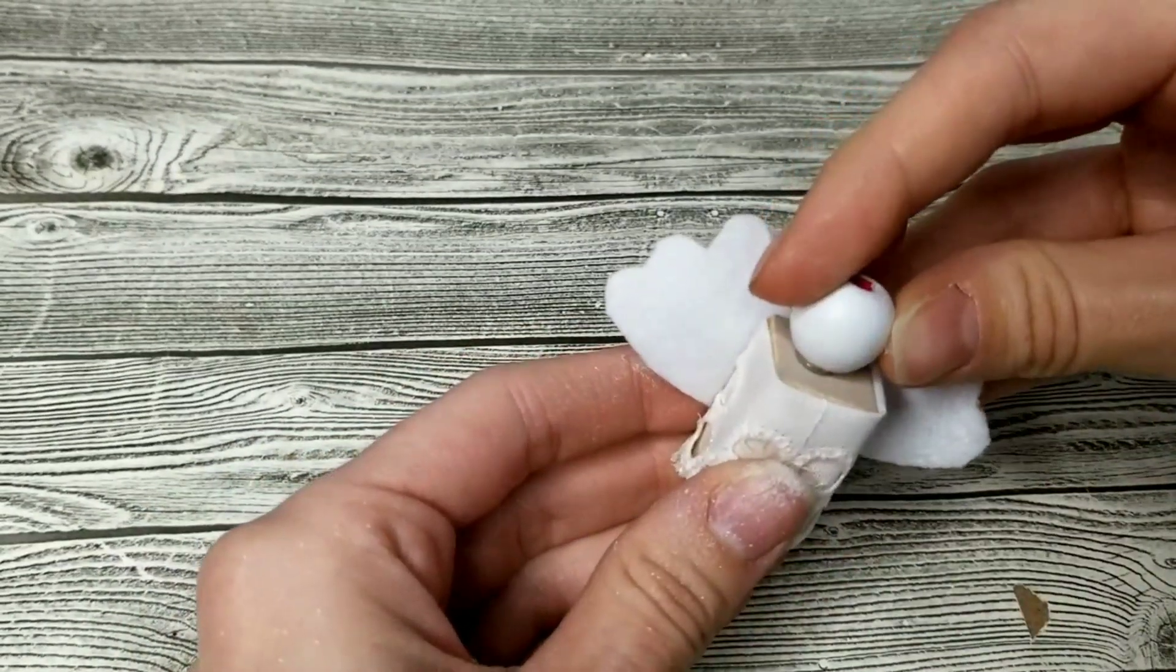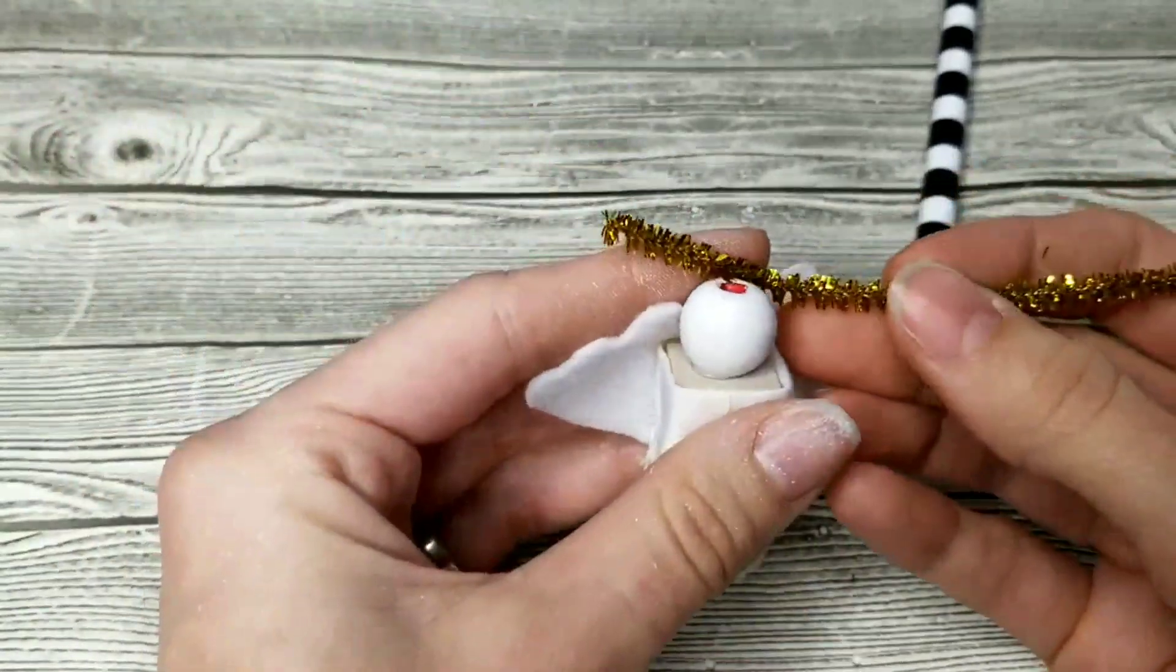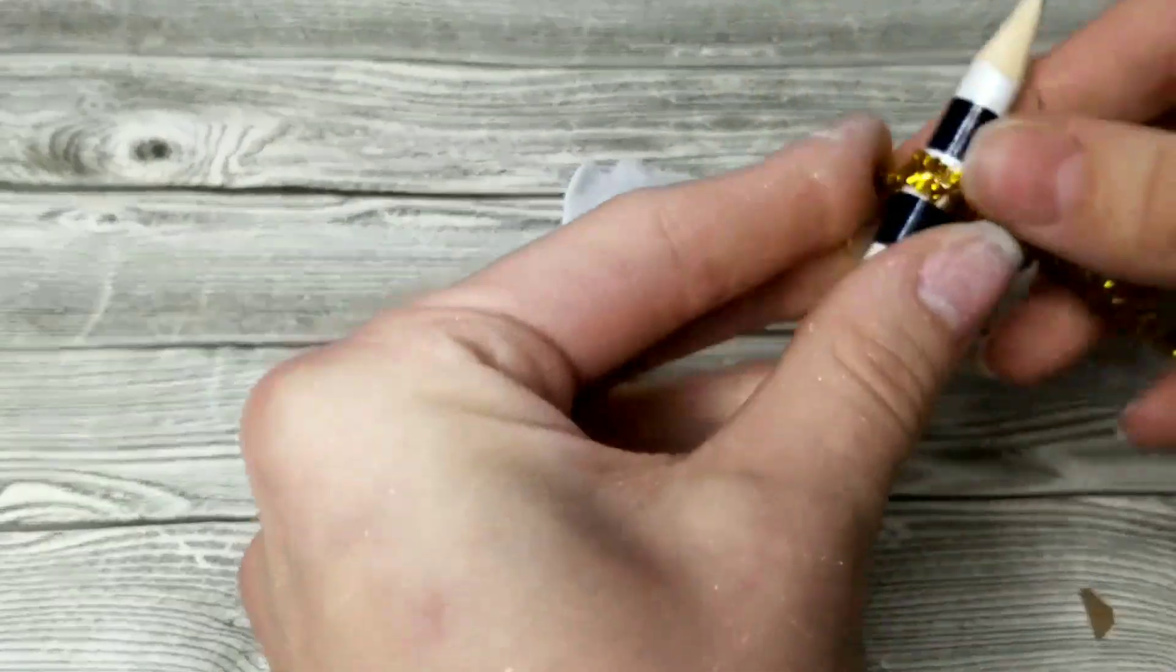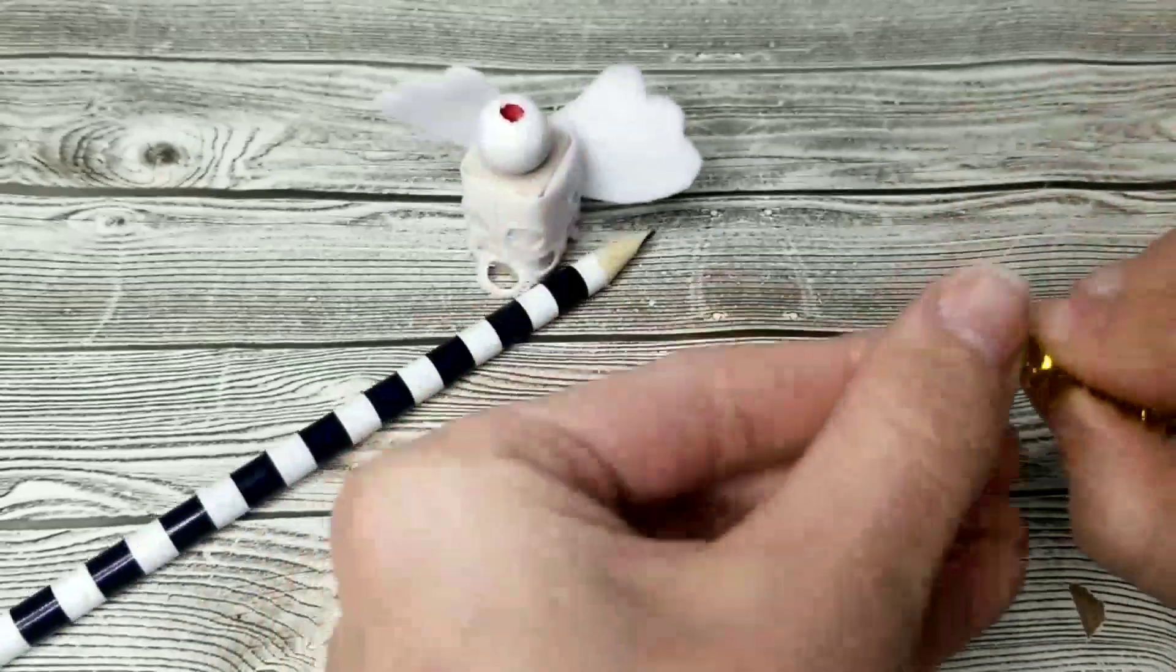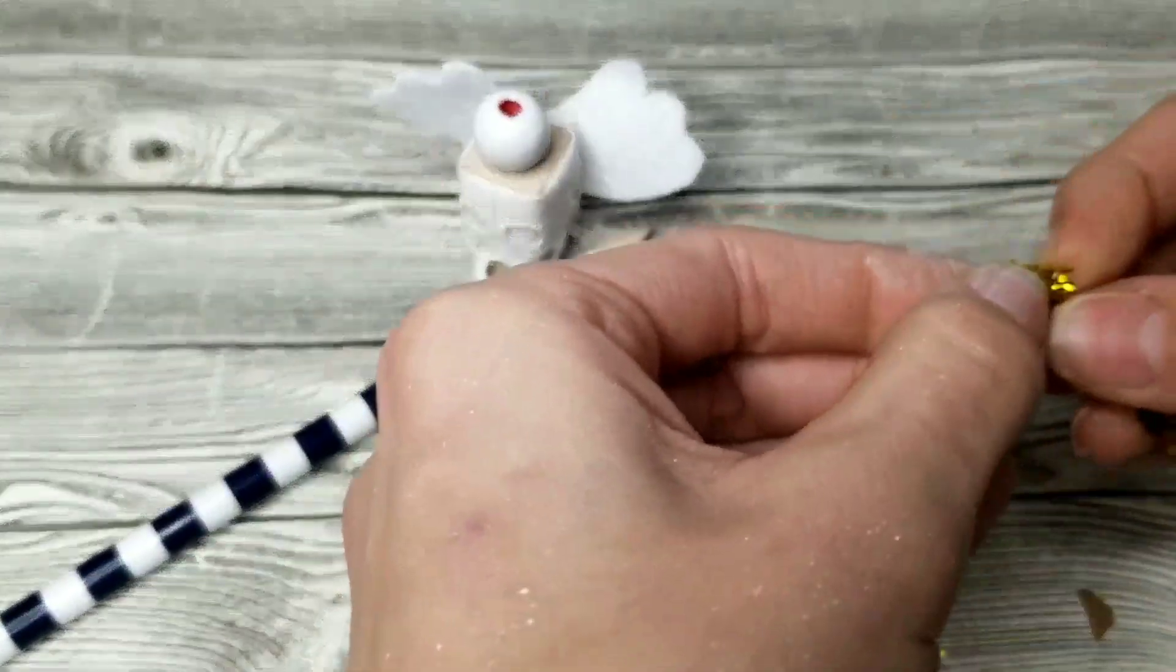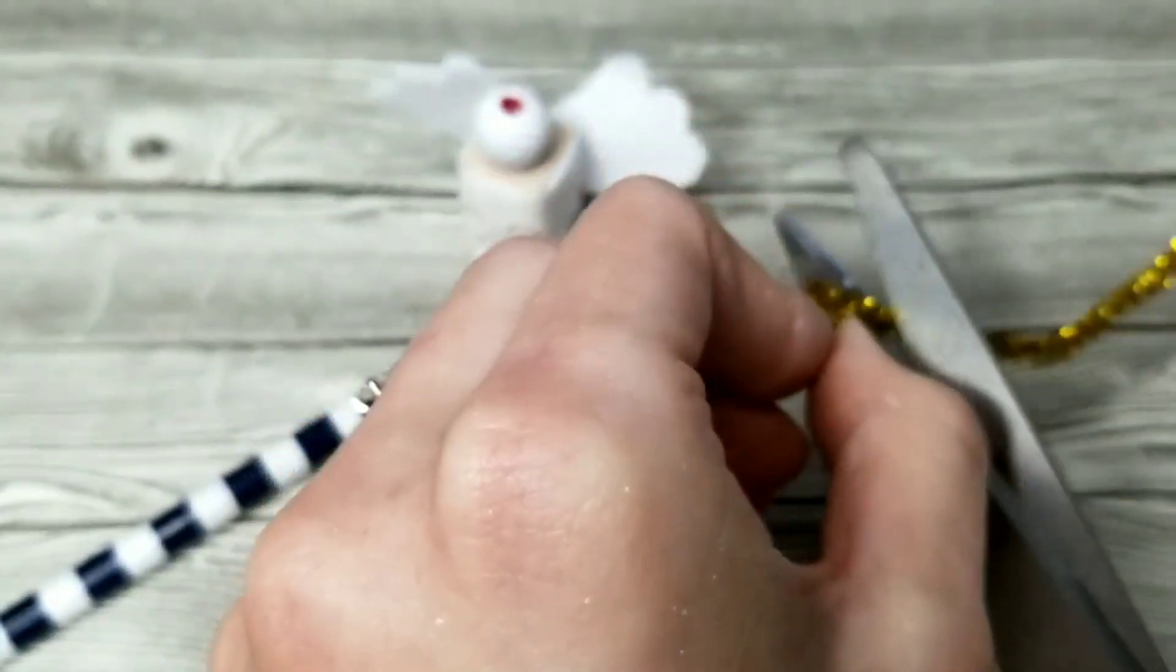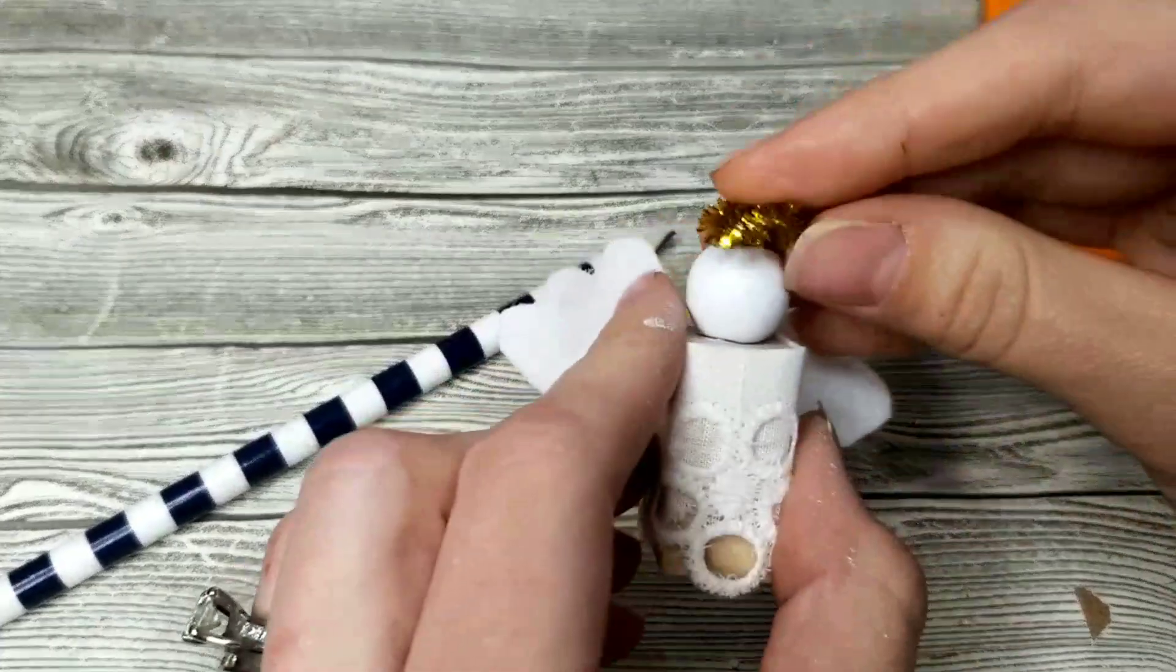For the halo, I used a piece of gold pipe cleaner. I wrapped it around a pencil to get that tiny round shape and then I left a little bit extra so that I could twist the two sides together. And then when I was happy with the shape, I cut it off and then all I did was slip it down the center of that white bead.